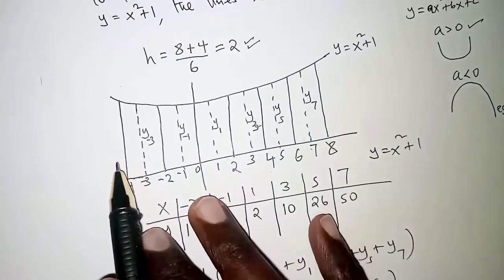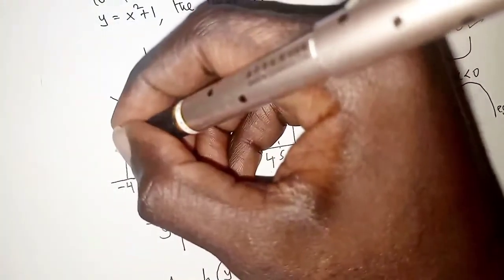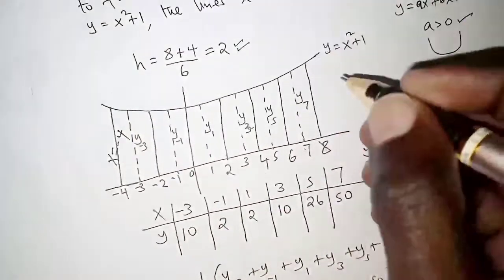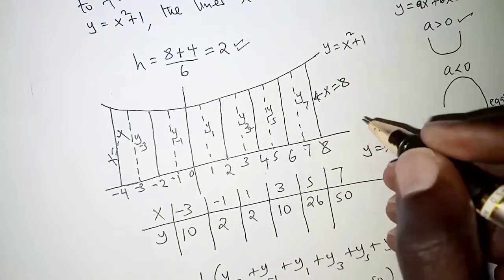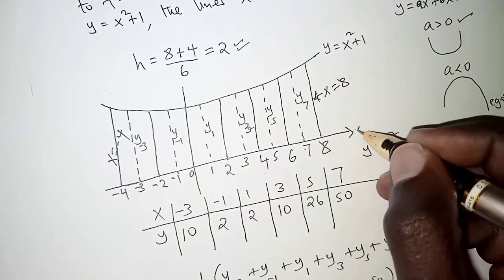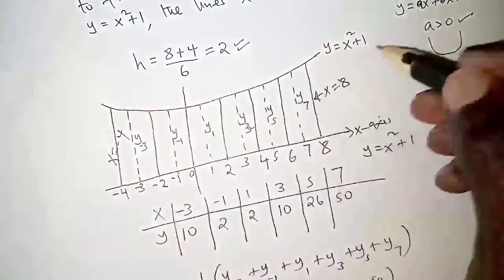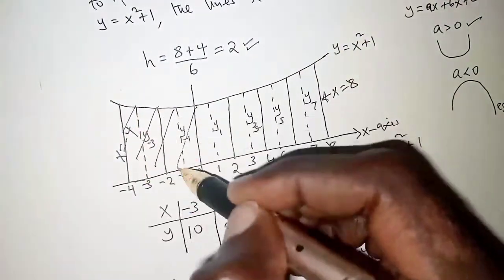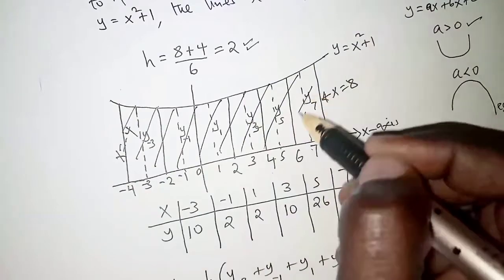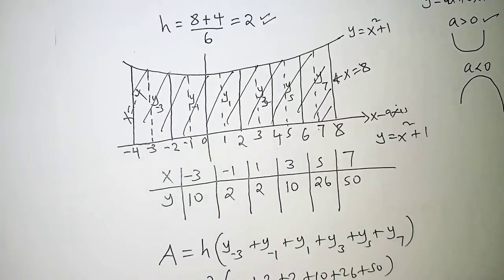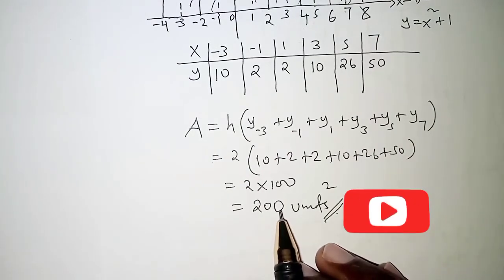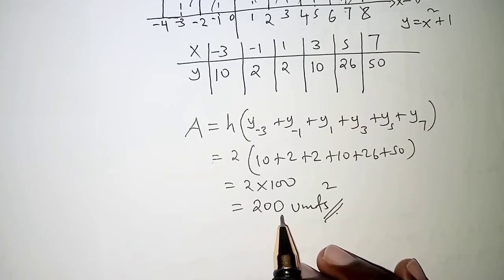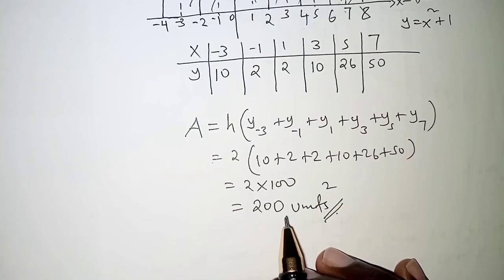Thus we have estimated the area under the curve as bounded by the line x = negative 4, the line x = 8, and the x-axis. The shaded area gives a final answer of 200 square units. Thank you for staying with me up to this moment — thank you for watching, and I hope to see you in the next video. Bye!